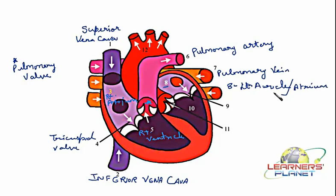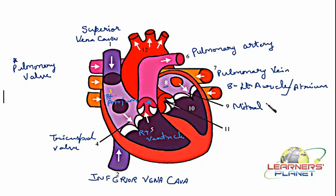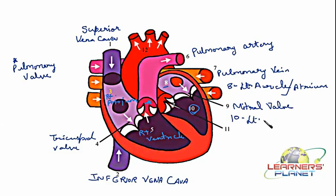Now from this left atrium or left auricle, blood is going to be transferred to the next chamber. It is not an easy flow over there — it is passing through the valve here, which is controlled by the bicuspid valve. So this particular valve, which is bicuspid, is known as the mitral valve or the bicuspid valve. This is how the oxygenated blood is now transferred into the next chamber, numbered as ten here — the left ventricle.